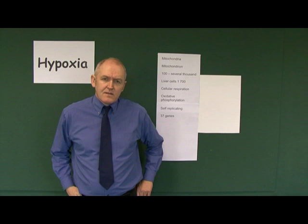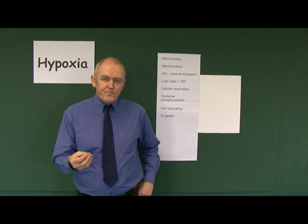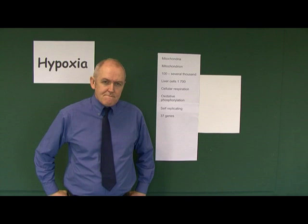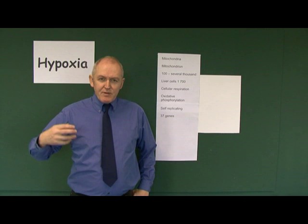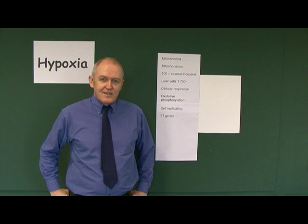But cells which are very metabolically active contain many more. What body cells can you think of that are very metabolically active? Well, muscle cells — obviously. Skeletal muscle cells contain a lot of mitochondria. Cardiac muscle cells contain a lot of mitochondria, because they're having to produce a lot of energy. The mitochondria are the powerhouse of the cell, depending on a good oxygen supply.